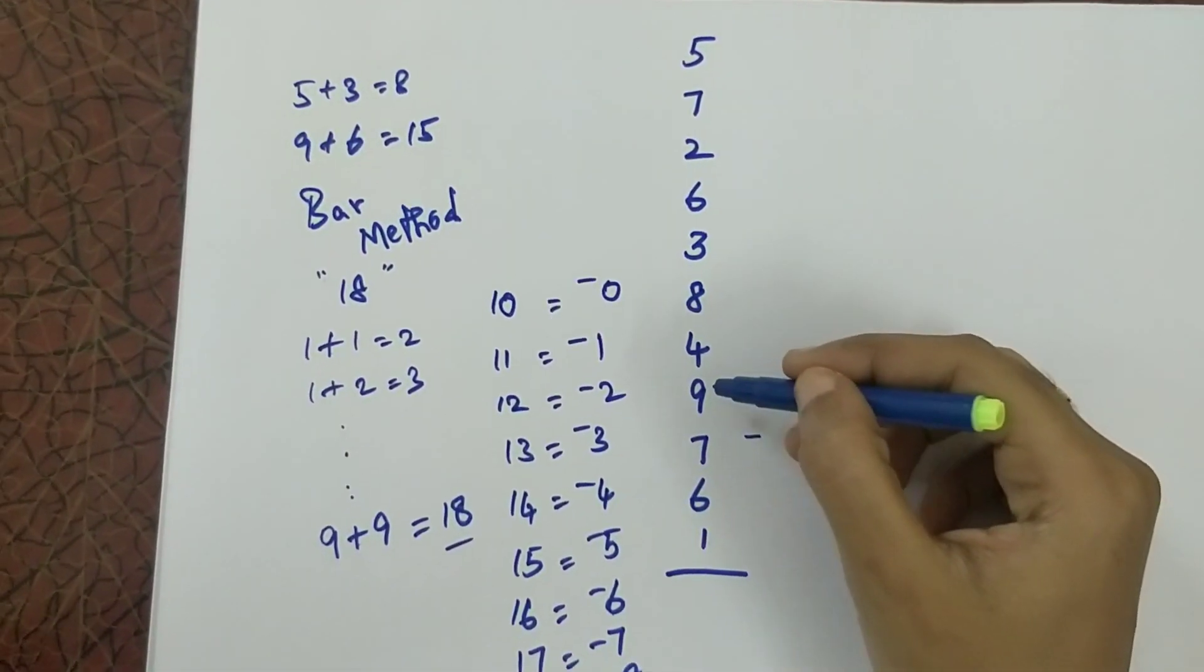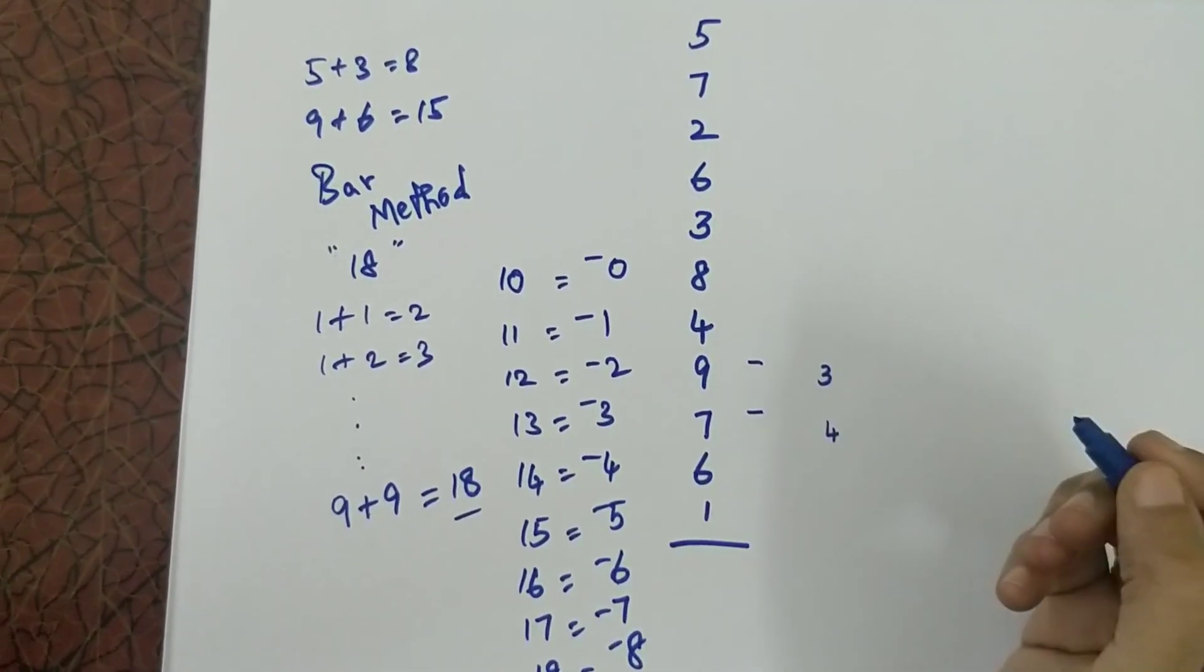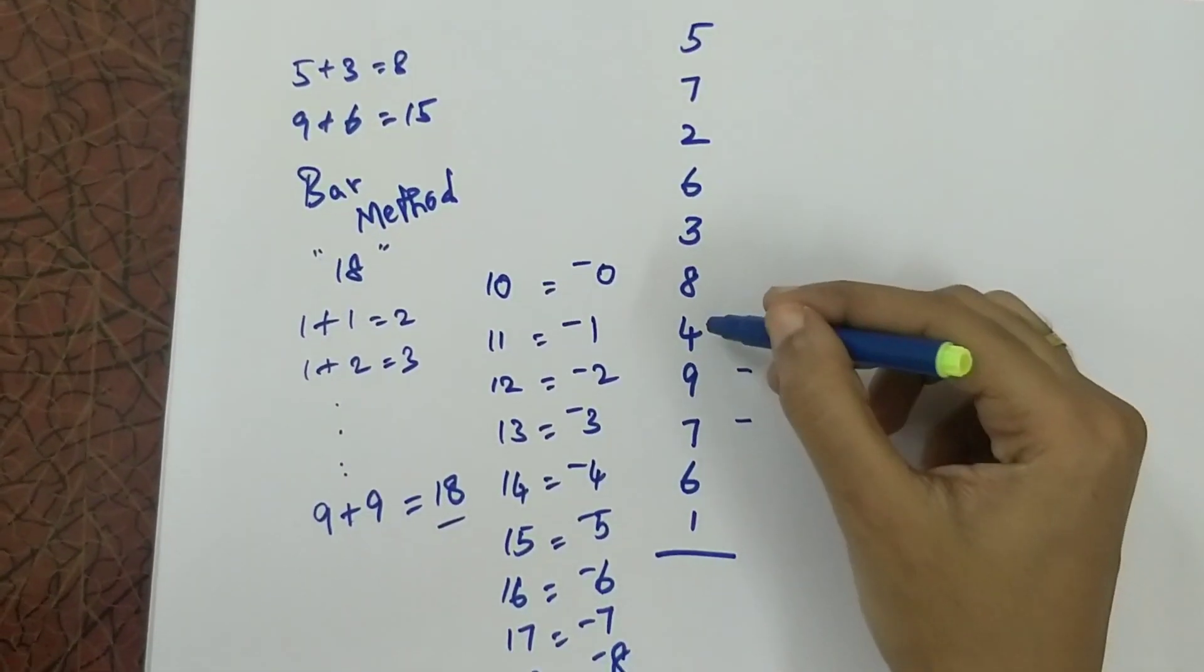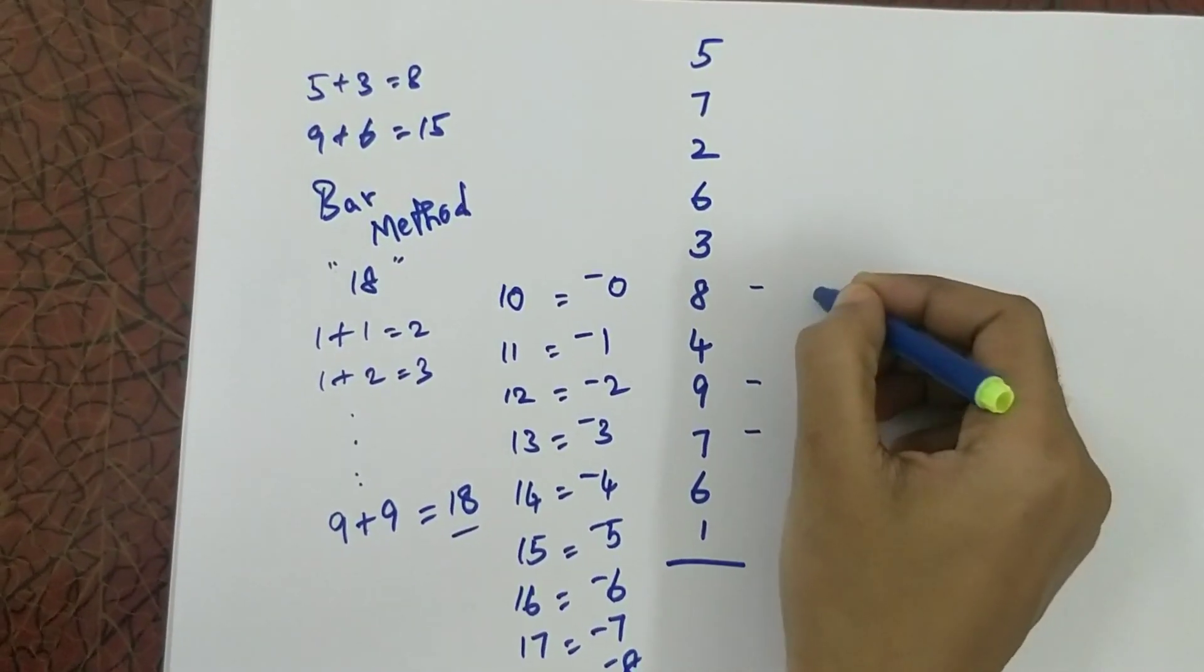4 plus 9 is 13. So again I am writing one bar and then 3. 3 plus 4 is 7. 7 plus 8 is 15. So bar 5.